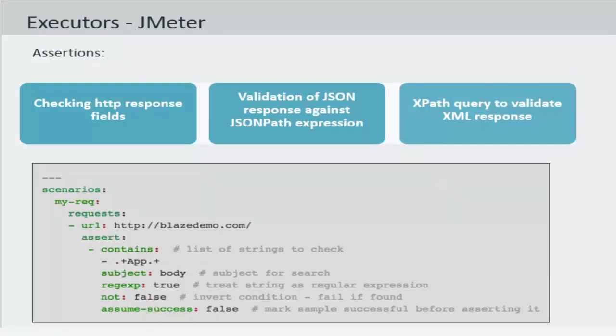We also support JMeter assertions in Taurus. Assertions are attached to a request element and are used to set the fail status on the response. Fail status for the response is not the same as the response code for JMeter. For now we support three types of response assertions: checking HTTP response fields, validation of JSON response against JSON path expression, and XPath query to validate the XML response.